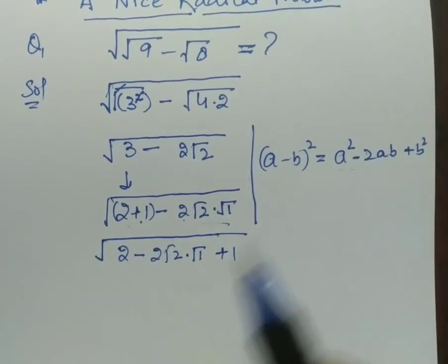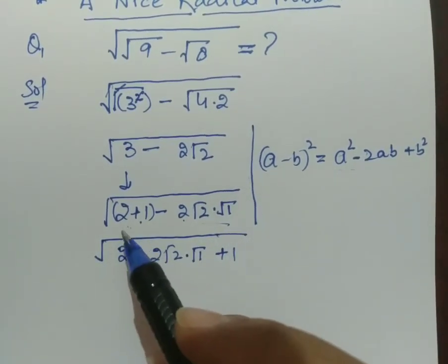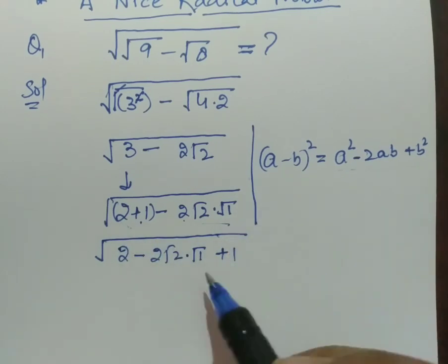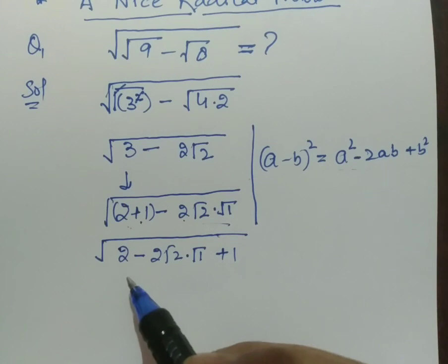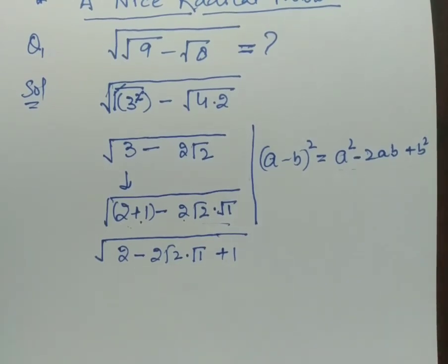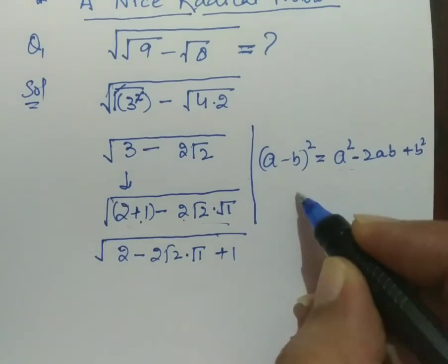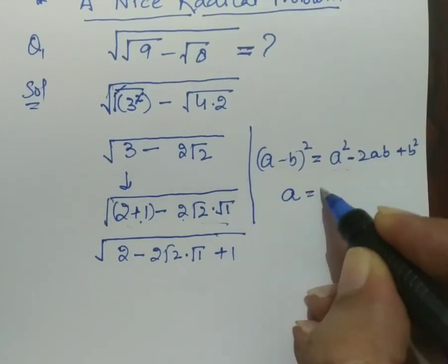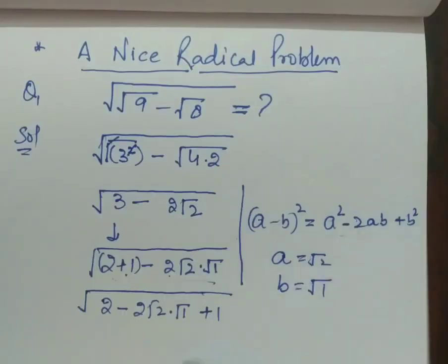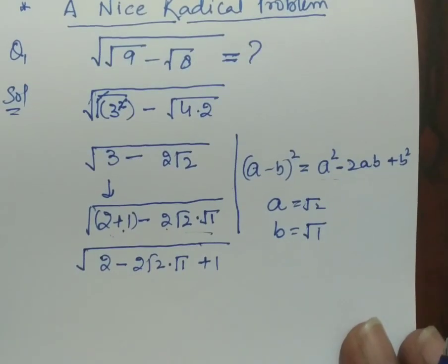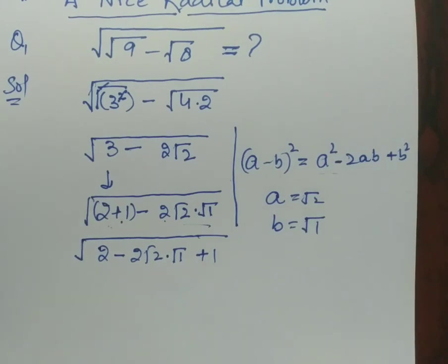Actually when the value is given plus minus, we can write from anywhere. So now what we do is here a is root 2 and b is root 1. Now we can write the square root.